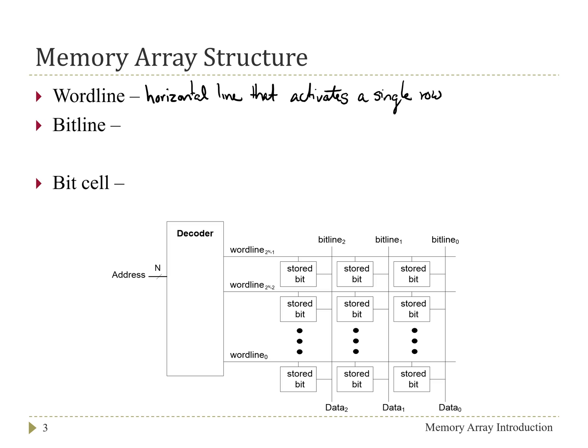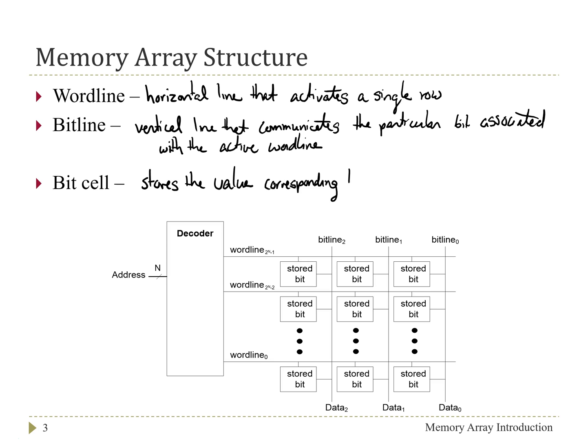When a row has been activated, we want to be able to read out or possibly write in new data. And to do that, we have bit lines which access the individual columns. And so the bit line is the vertical line that communicates the particular bits associated with the active word line out of the array. Or alternatively takes the data feeding in and stores it in the particular bit or particular column. And then finally to store the data, we have some piece of hardware referred to as a bit cell that stores the value corresponding to the address identified by the crossing word and bit lines.